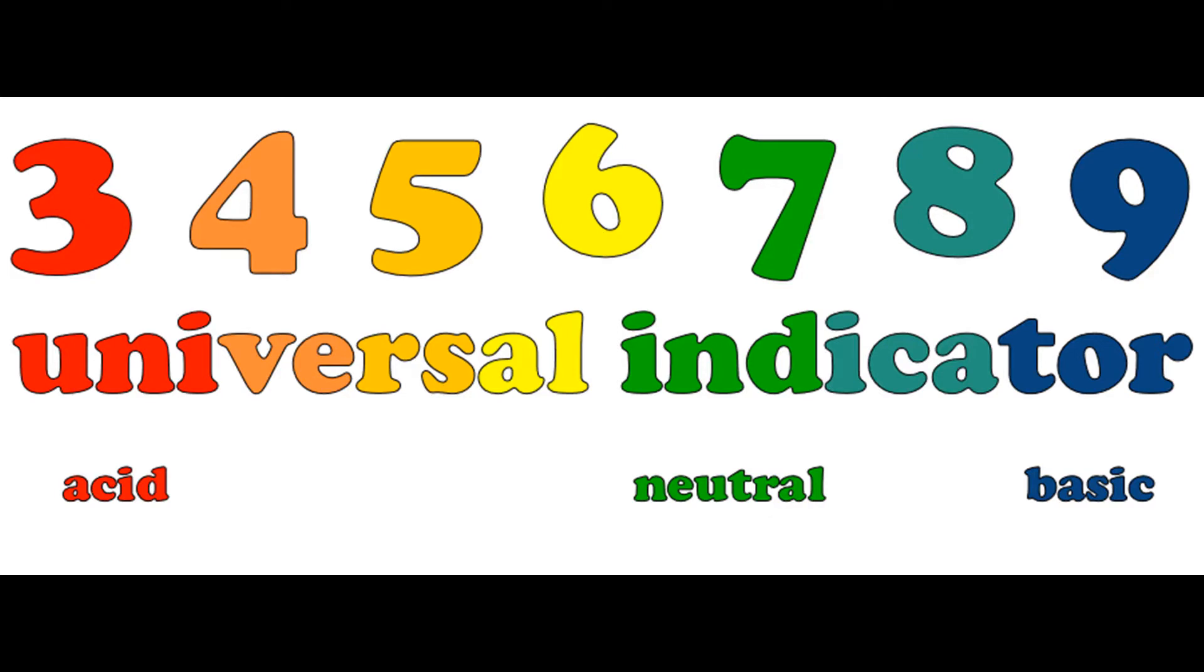Universal indicator allows us to see the pH of a solution. It is red, orange, or yellow in an acid, green in a neutral substance, and blue in a base.